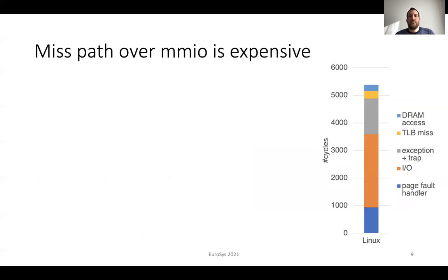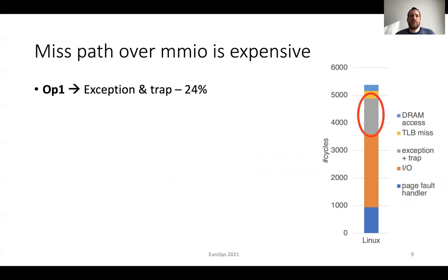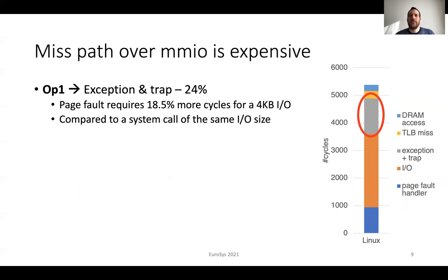The miss path over memory mapped IO is expensive. In order to quantify these overheads, we provide an execution time breakdown of a microbenchmark. The y-axis shows the number of cycles. The first operation results in a page fault for misses, requiring both an exception and a trap. This is about 24% of the total execution time. We measure that a page fault requires about 18.5% more cycles for a 4KB IO compared to a system call of the same IO size.